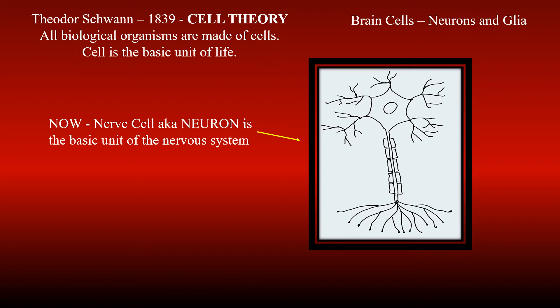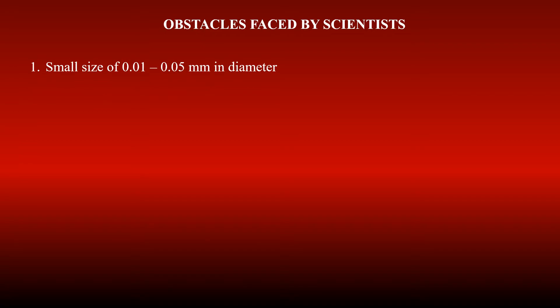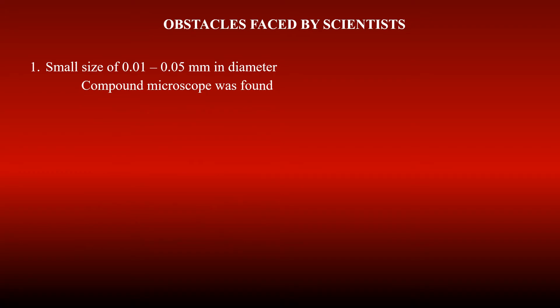In the past, when scientists were struggling to find what the nervous system is made of, how did neurons come to be found as the fundamental unit of the brain? Let's explore. In the initial stages of cellular neuroscience, scientists faced many obstacles to figure out what an individual brain cell looked like. One was its small size of about 0.01 to 0.05 millimeters in diameter. This created a pause in the scientific world until the compound microscope was used in the mid-17th century to view the cells.